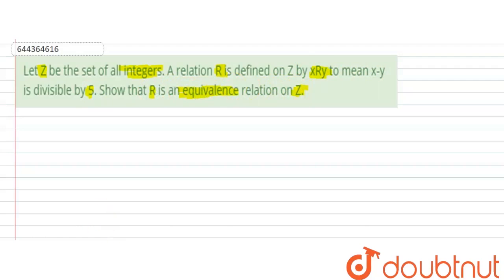So, for a relation to be equivalence, it must be reflexive, symmetric and transitive. So, first we will look at reflexive relation.